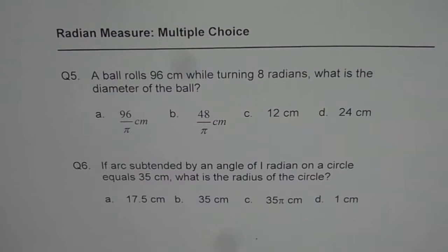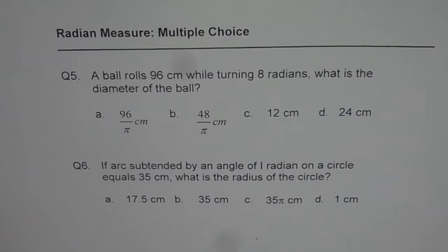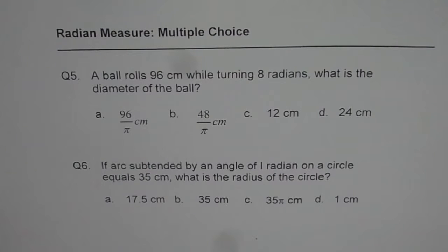I'm Anil Kumar and here are two more questions on radian measure trigonometry. Question five: a ball rolls 96 cm while turning 8 radians — what is the diameter of the ball? We are given four choices. Question number six: if the arc subtended by an angle of one radian on a circle equals 35 cm, what is the radius of the circle? You can pause and answer the question; here is my solution.